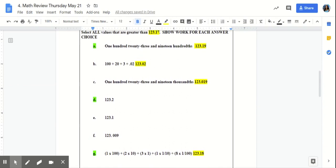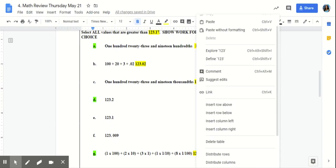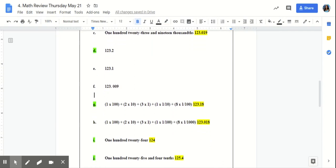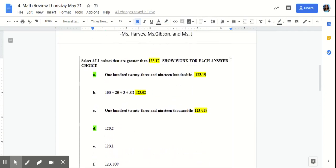your next strategy should be to stack each number on top of one another so that you can compare the place values in each number. And then you'll be able to tell which values are greater than 123.17.